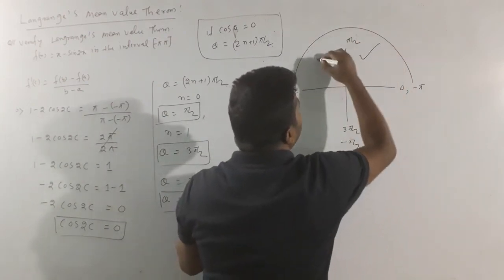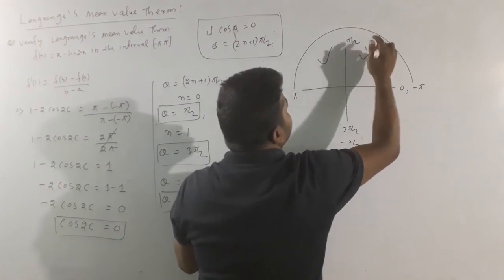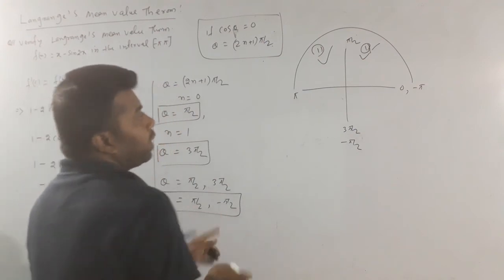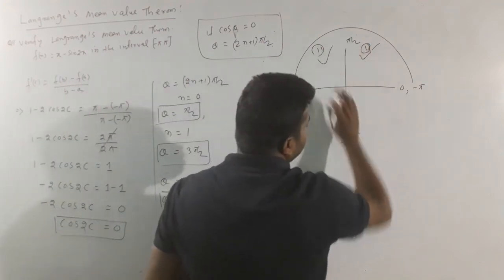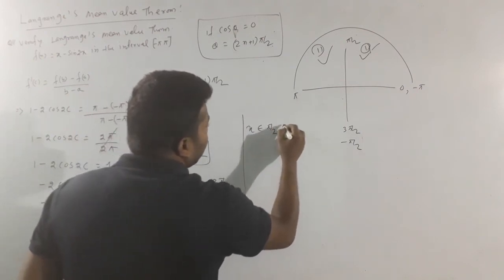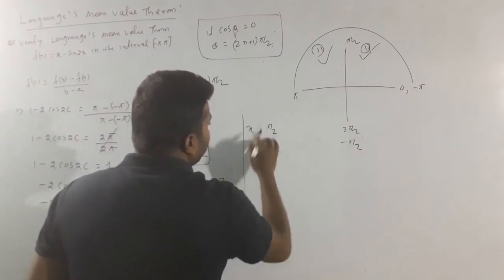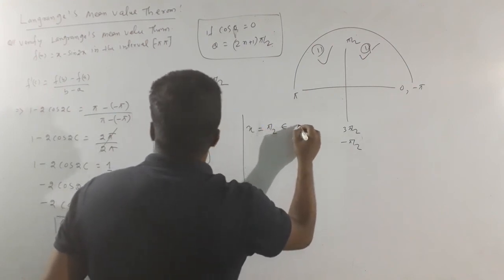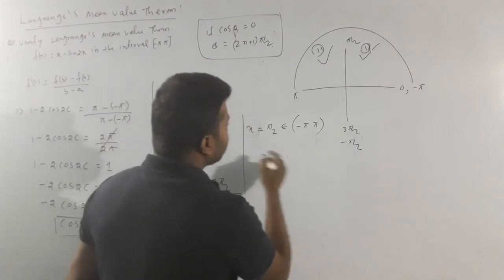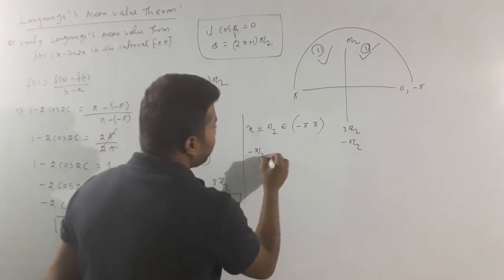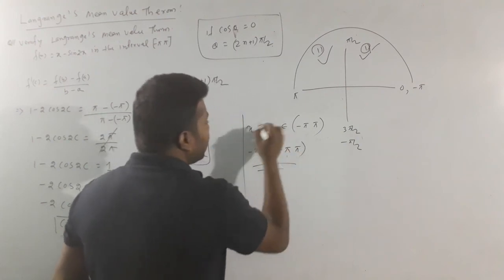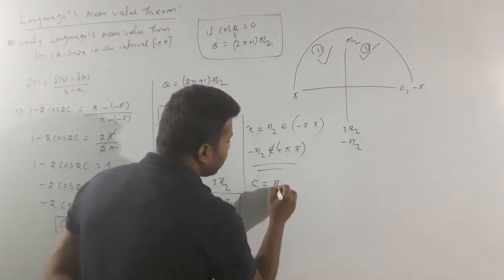So 2c equals pi by 2, giving c equals pi by 4. Checking the range: the interval is minus pi to pi. We have c equals pi by 2, and pi by 2 belongs to the interval minus pi to pi. Also minus pi by 2 belongs to minus pi to pi. So c is equal to pi by 2. LMVT is verified.